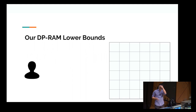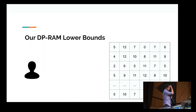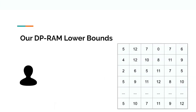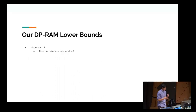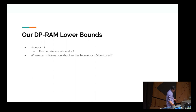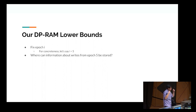Going back to the cell probe model, we have all these cells on the server. We number them in a specific way: each cell is assigned a number according to the epoch of the last operation that overwrote that cell. For example, the leftmost cell is a five, meaning the last operation that modified its contents occurred in epoch five. We do this for the entire server, and cells that were never modified are simply removed.